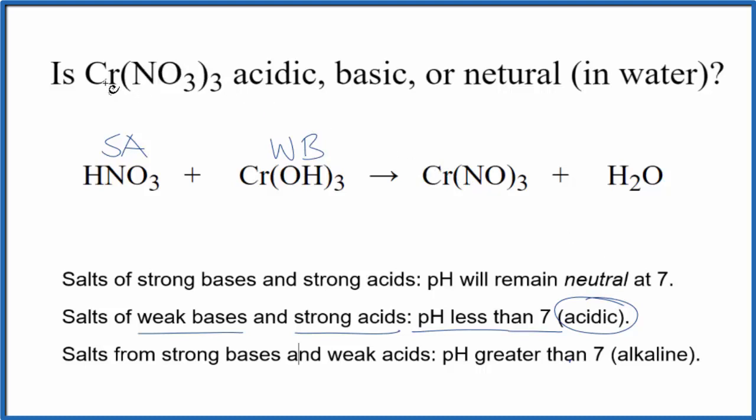In answer to our question, whether Cr(NO3)3 is acidic, basic, or neutral in water, we can say that it will be an acidic solution and the pH will be less than seven.